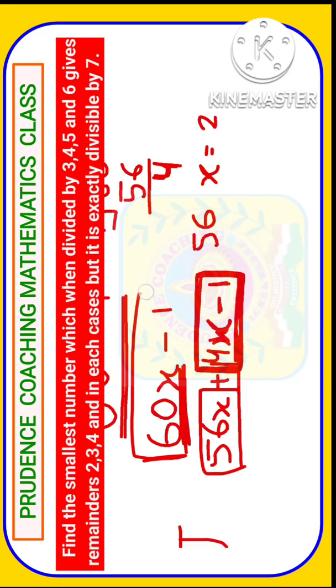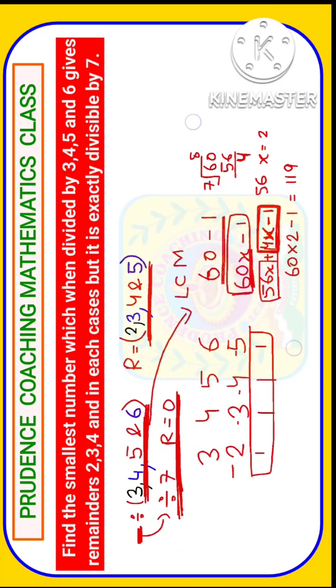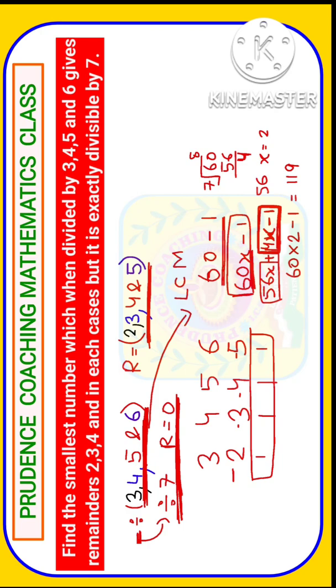So put x equal to 2 here, you will get 60 into 2, that is 120, minus 1. You will get 119. So here 119 is our answer.